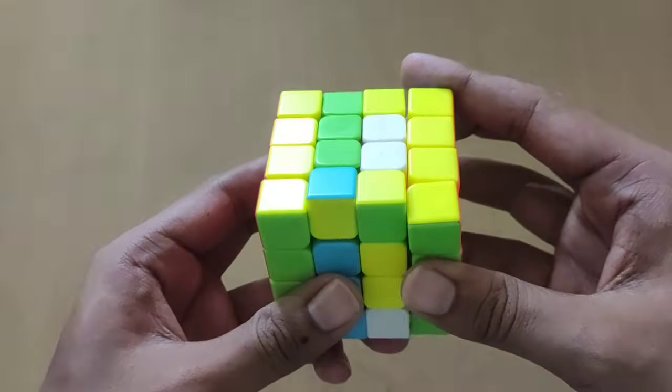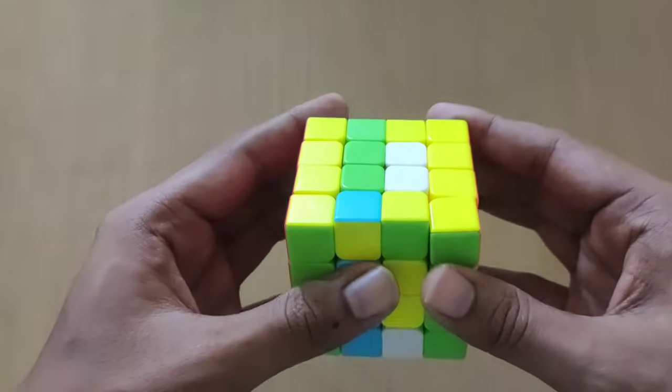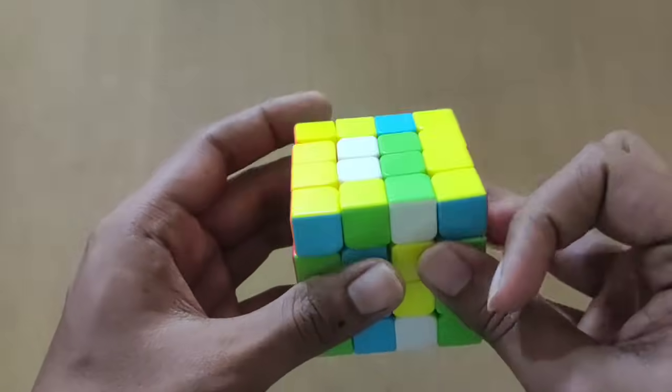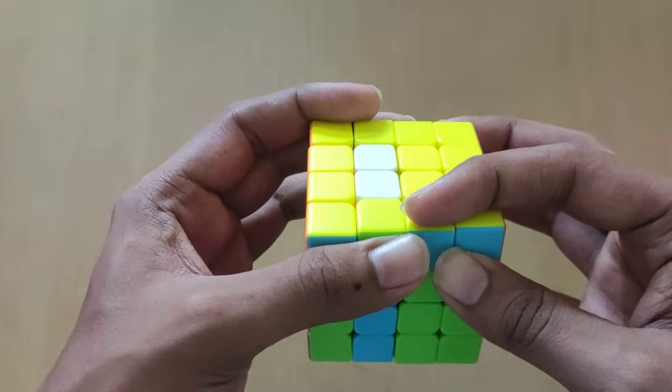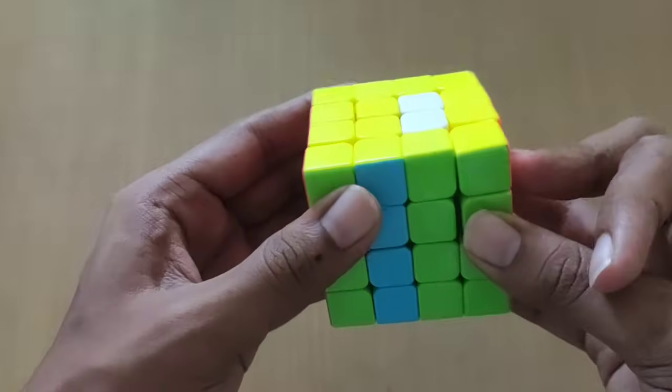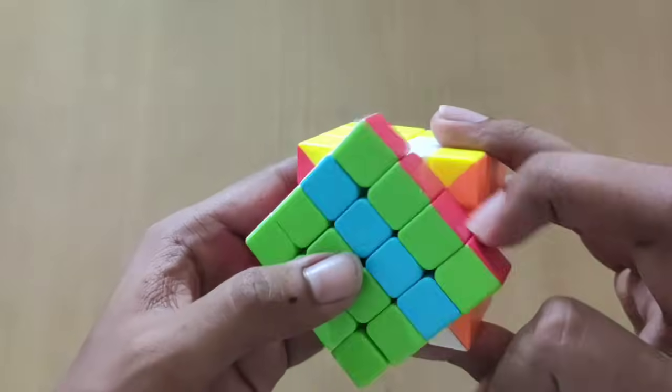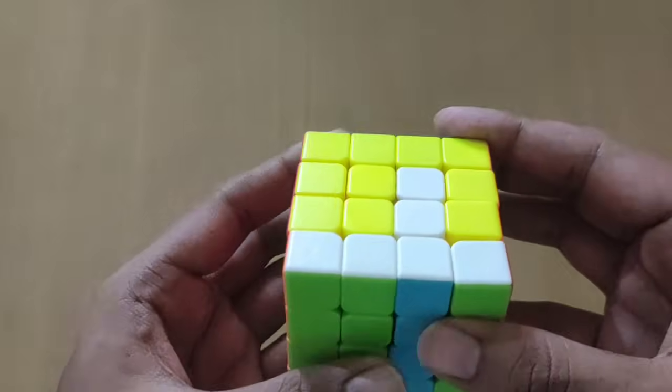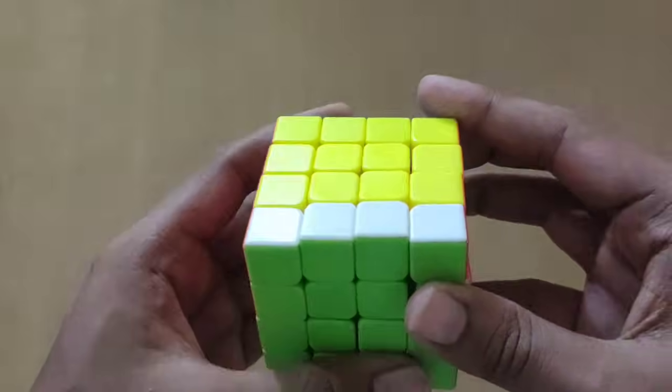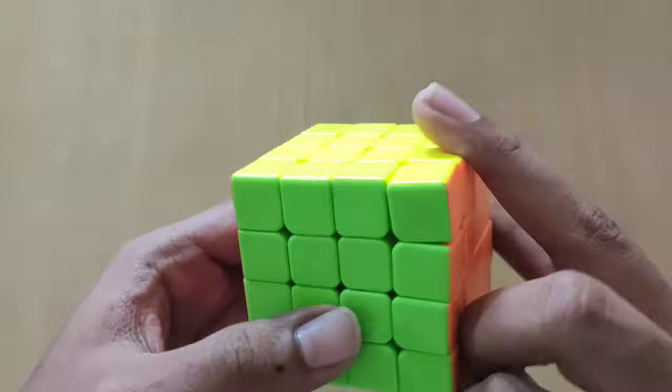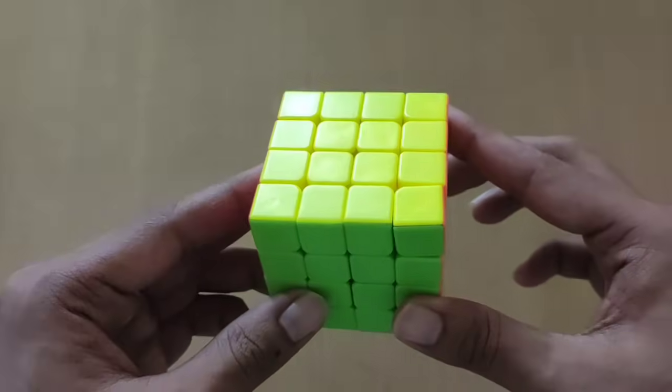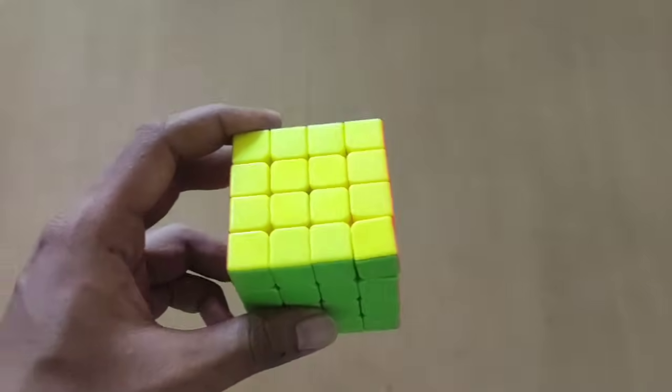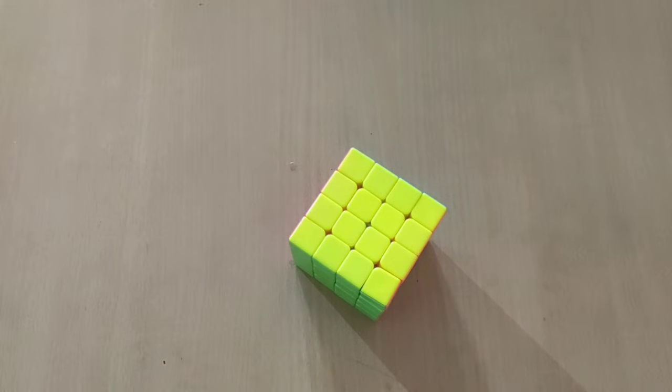Small r, u2, small r prime, u2, now f2, small r2, and then f2. There you go, you solved both the parities. Now I guess you can easily solve the 4x4 Rubik's cube on your own right now.